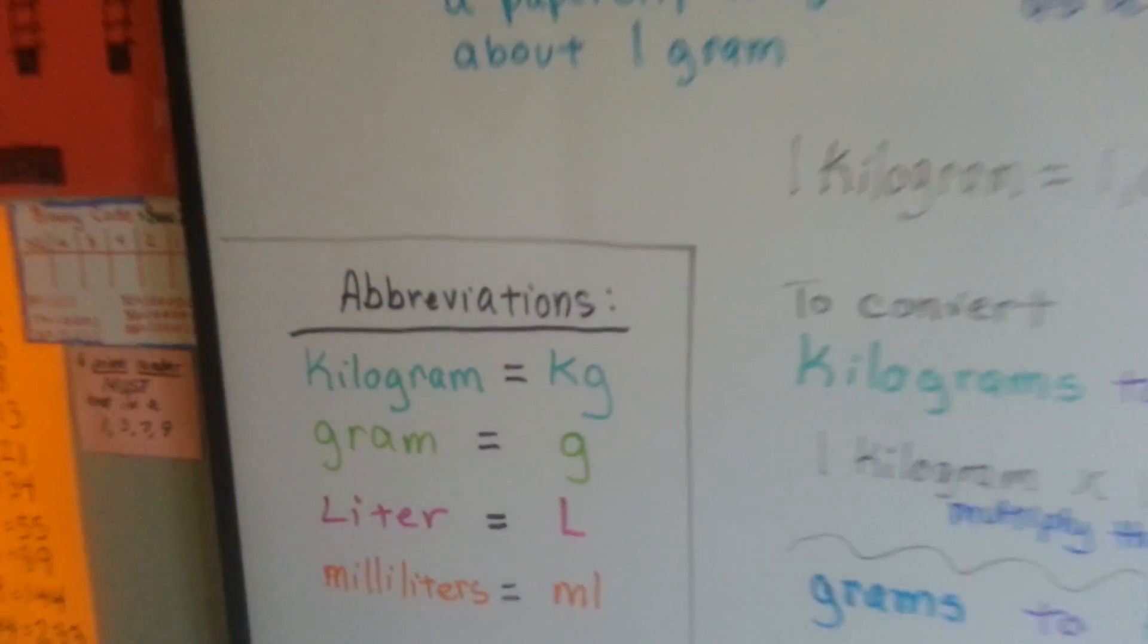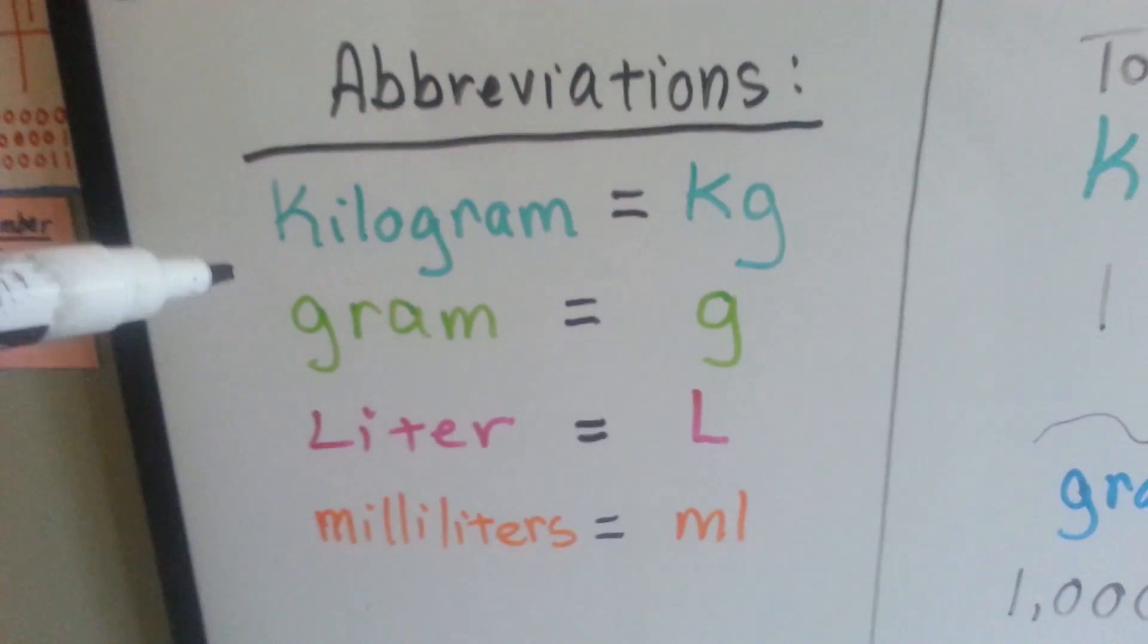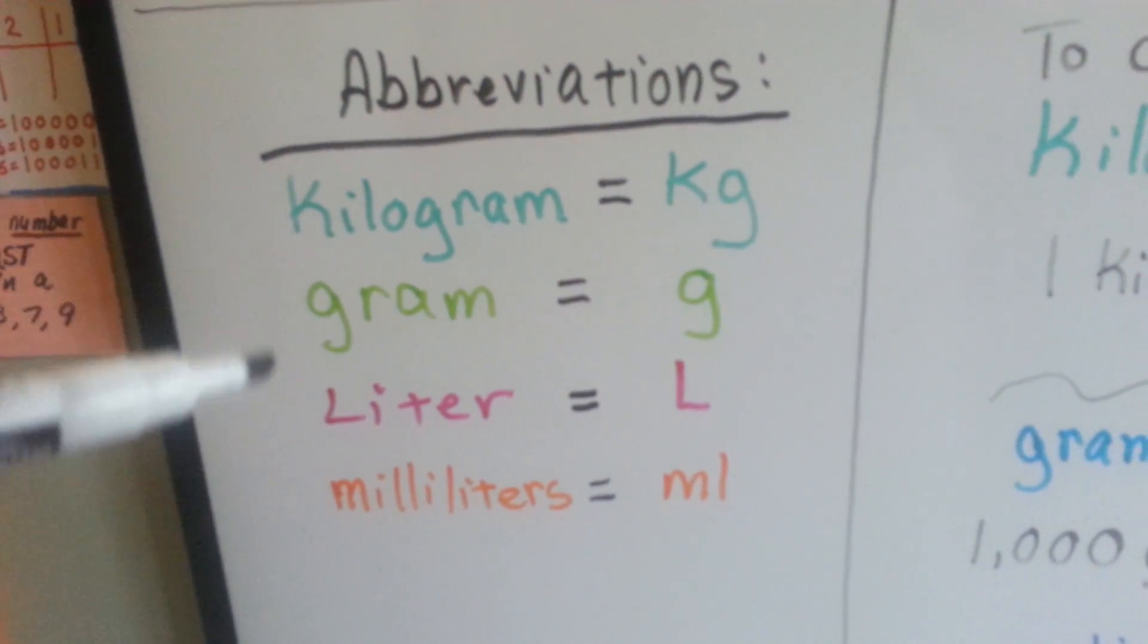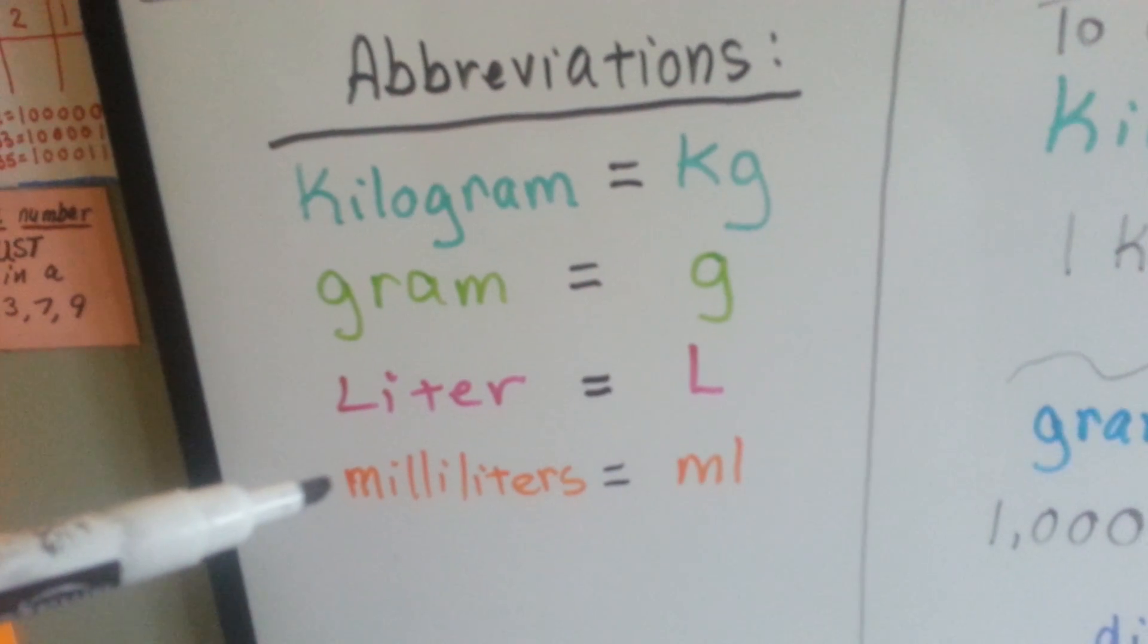So I have some abbreviations for you. A kilogram is kg, gram is g, liter is l, and milliliter is ml.